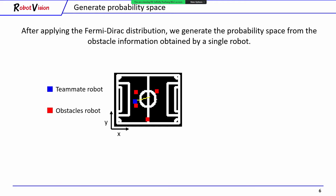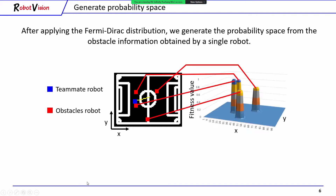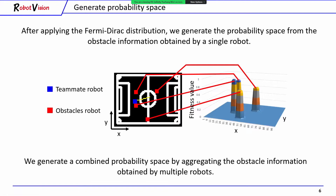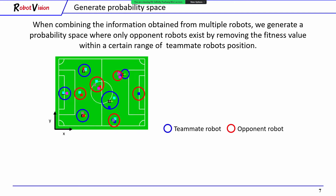After applying the Fermi-Dirac distribution, we generate a probability space from the obstacle information obtained by a single robot, like this. After that, we generate a combined probability space by aggregating the obstacle information obtained by multiple robots. When combining information from all robots, we generate a probability space where only opponent robots exist by removing the fitness values within the center range of the teammate robot position, like this blue circle.